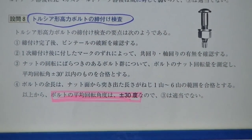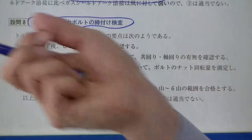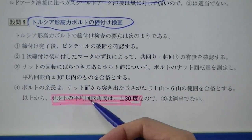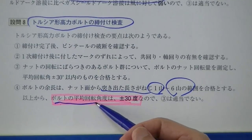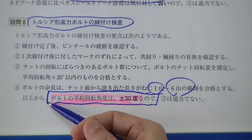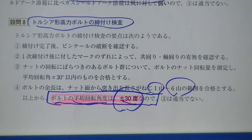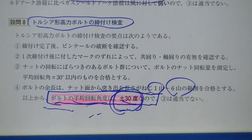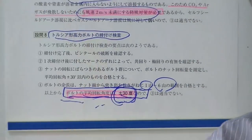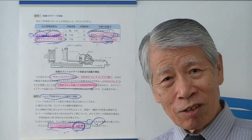トルシア型の高力ボルトについて。ピンテールがパーンと切れたらそれで締まったという判定ができます。締め付け検査では突き出しが1山から6山以内であること、ボルト群の平均回転角に対してプラスマイナス30度の範囲に収まっているものを合格とします。これが重要なポイントです。